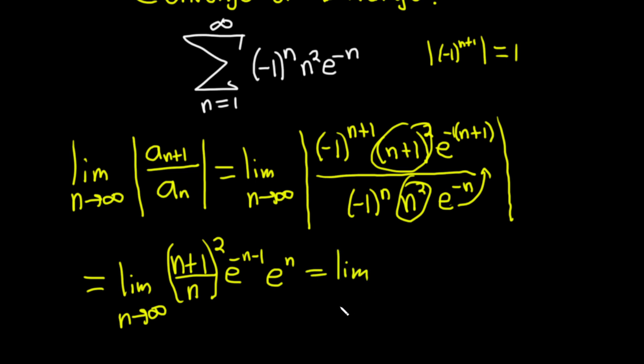This is the limit as n approaches infinity of (n+1)/n squared. You can break this up like this, and then these go away so you just get 1/e.